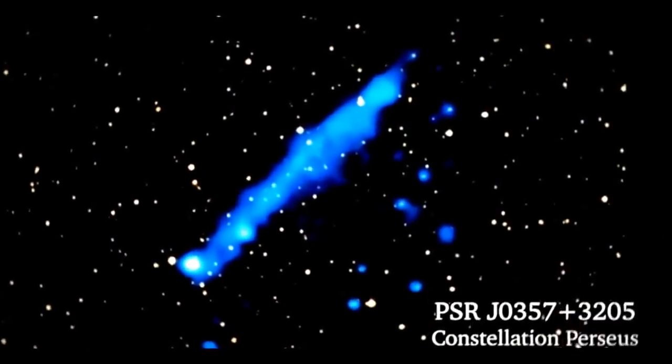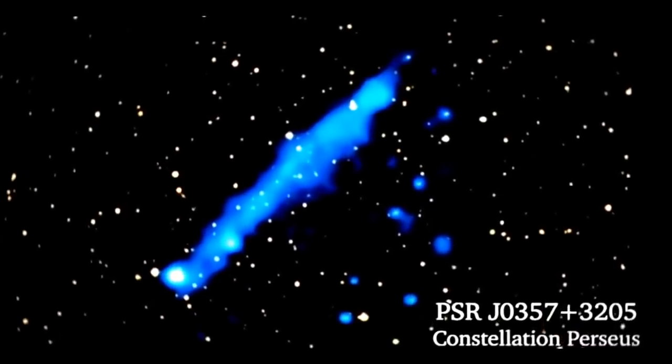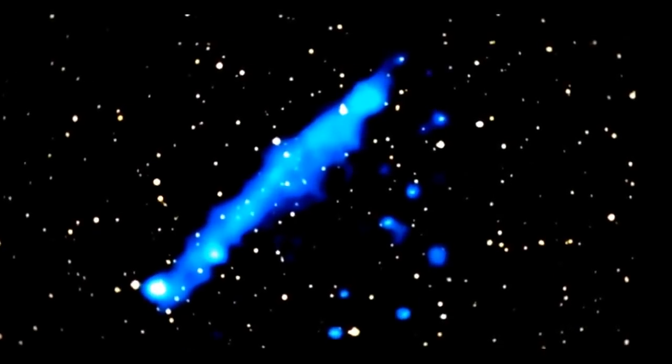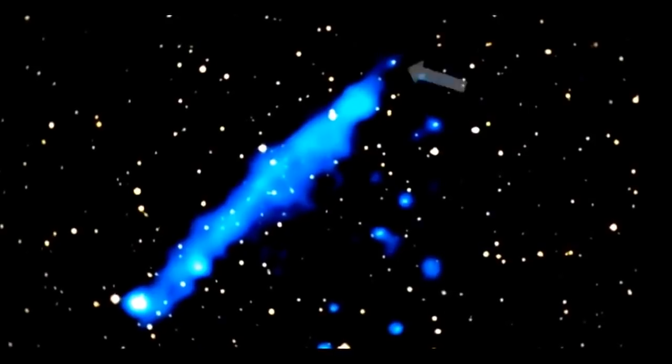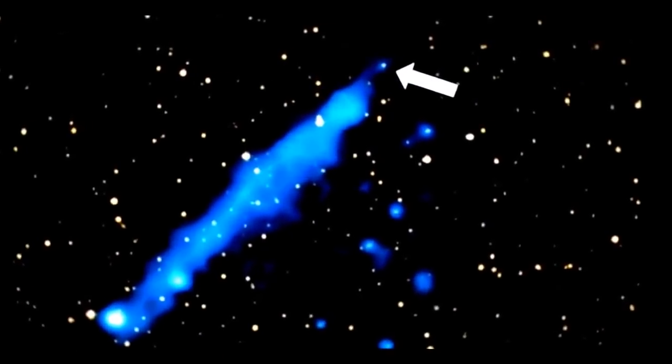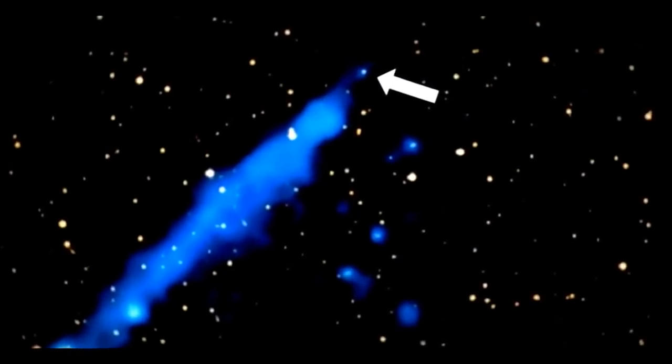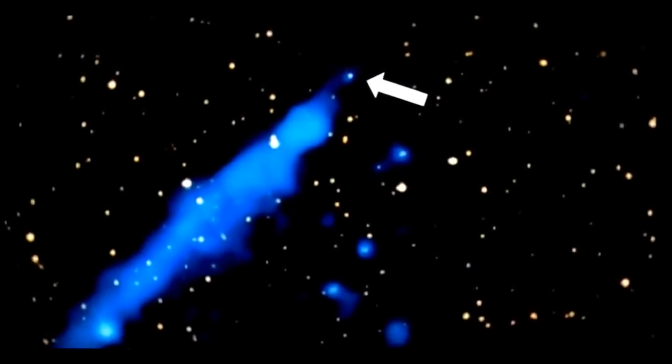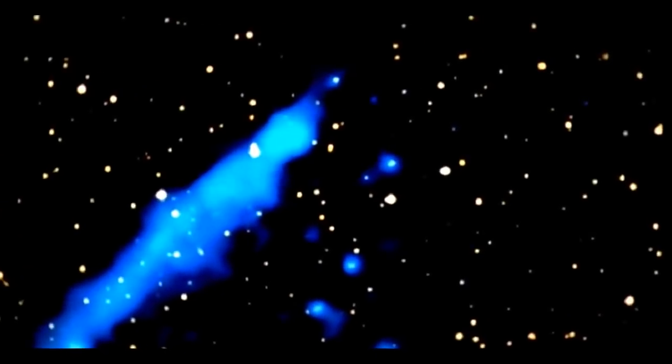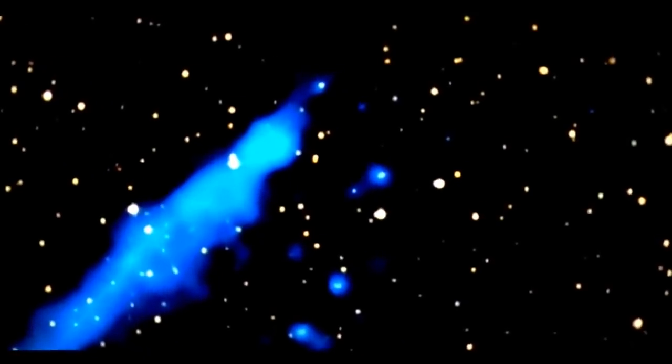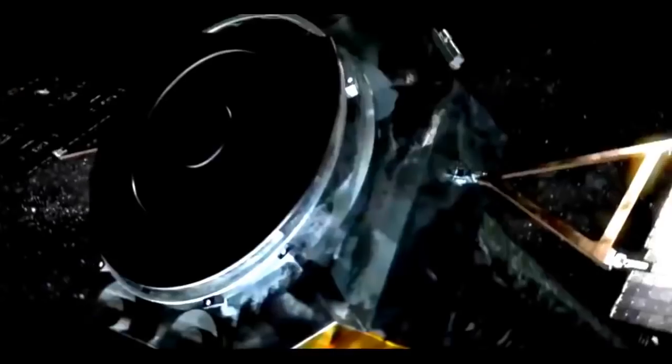This nebula has a long, long tail. And at one tip, a pulsar. The gas cloud is 4.2 light-years in length. Measurements show that the pulsar itself is not going anywhere, so this long tail is a mystery.